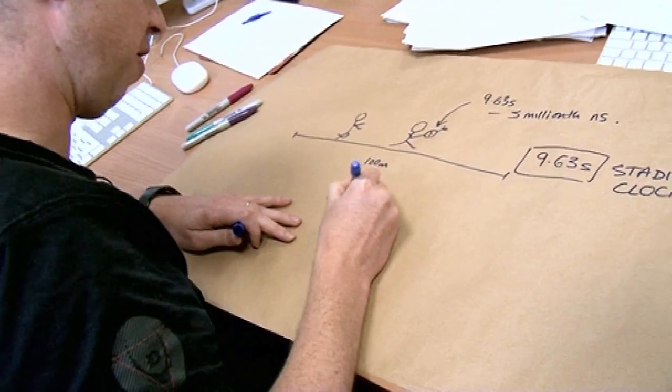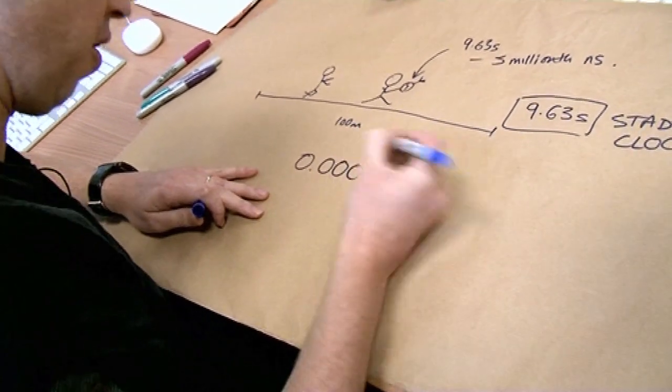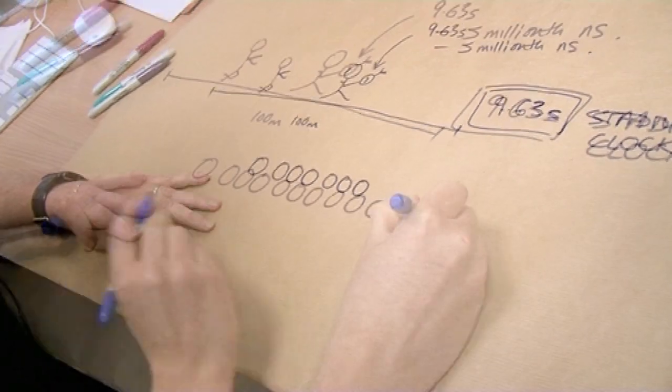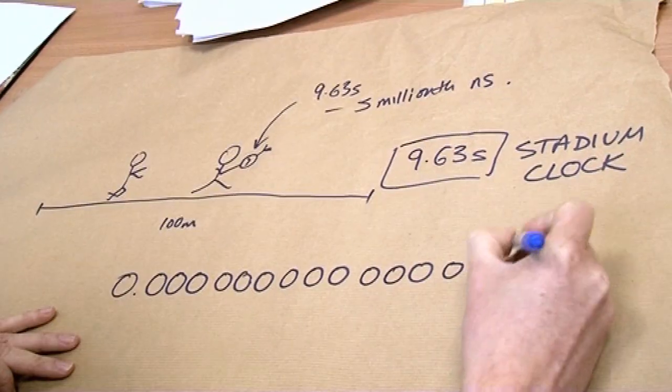So, he actually clocked, according to his clock, 5 millionths of a nanosecond less than the stadium clock, less than this 9.63 seconds. Okay, so a nanosecond is 10 to the minus 9 seconds. So, if you do it in the American billions, that's a billionth of a second. And then it's a millionth of that billionth.